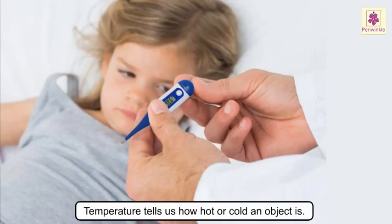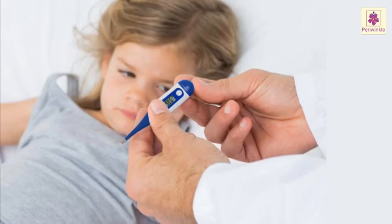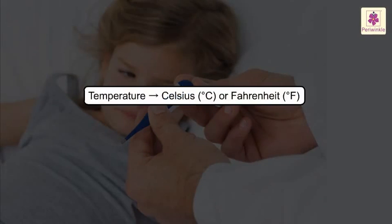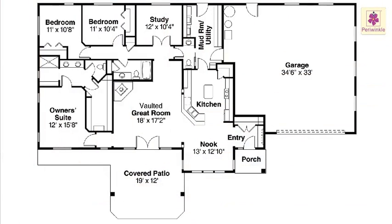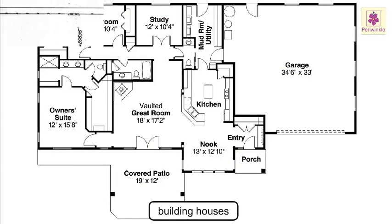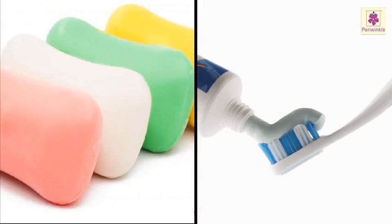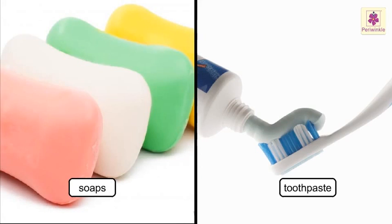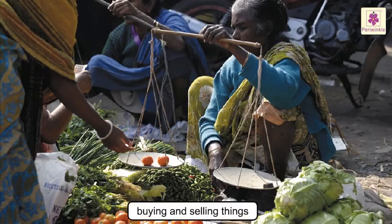Temperature tells us how hot or cold an object is. It is measured by a thermometer and expressed in degrees Celsius or Fahrenheit. Whether it is cooking, building houses and bridges, making soaps and toothpaste, or buying and selling things in the market — measurement is extremely important.